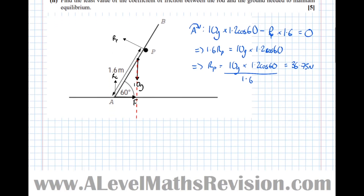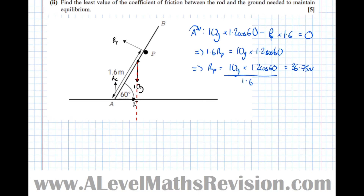Part two: find the least value of the coefficient of friction between the rod and the ground needed to maintain equilibrium. This is a situation of limiting equilibrium, so the least value of the coefficient of friction is when the ladder is on the point of slipping. We can now call friction F max, and we know that F max = μ × RG. The first thing to do is resolve Rp horizontally and vertically.